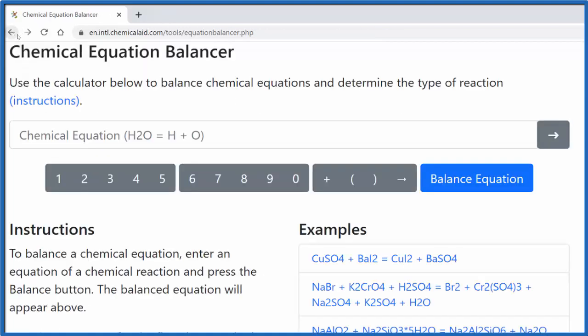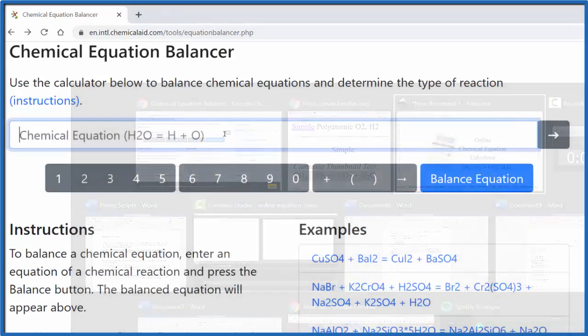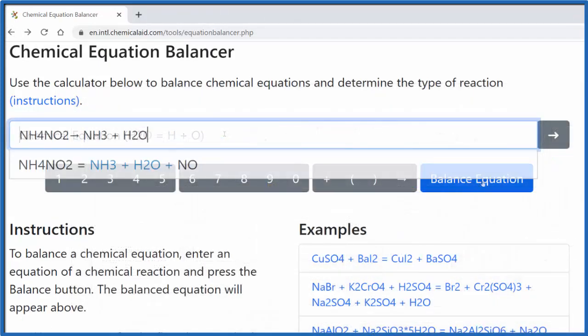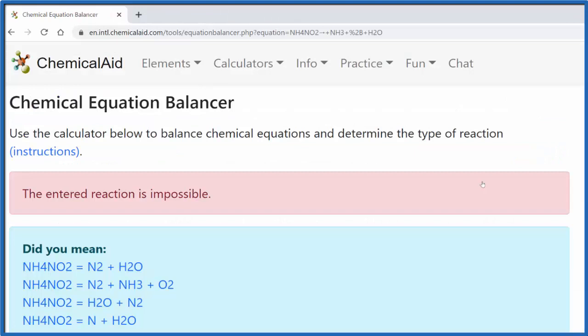For example, if we put this equation in and we balance the equation, it says 'the entered reaction is impossible.' That means no matter how hard I try, I'm not going to balance this equation. Sometimes you'll have copied an equation down incorrectly and it's just impossible to balance, so this also helps you solve that problem. And it's nice because this calculator will suggest other reactions that do work, so maybe you just typed the reaction incorrectly.